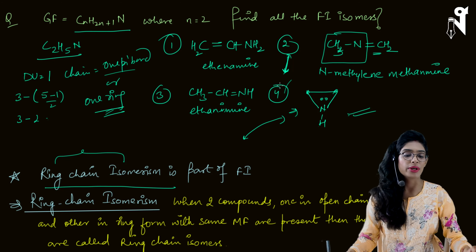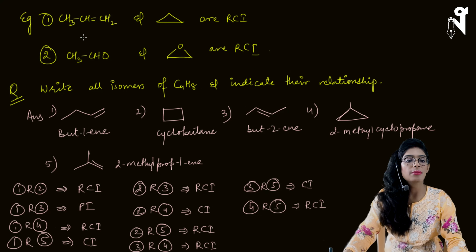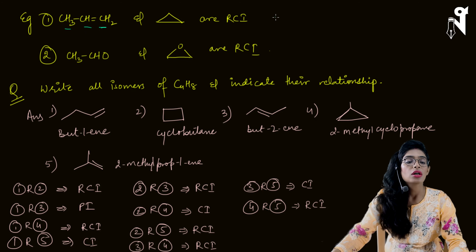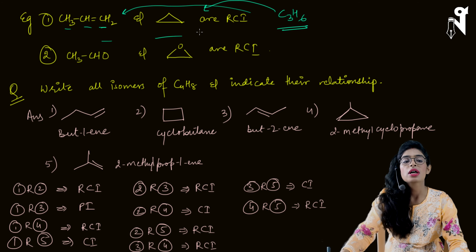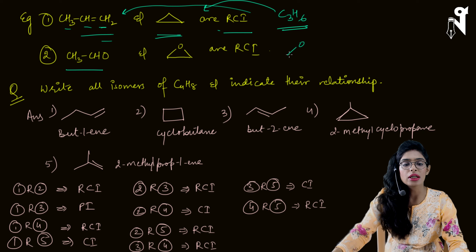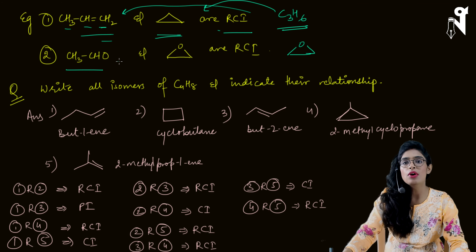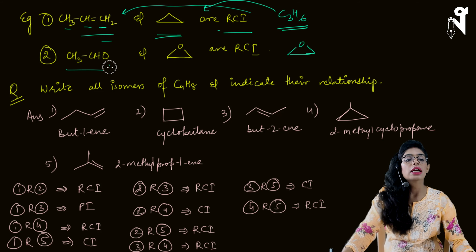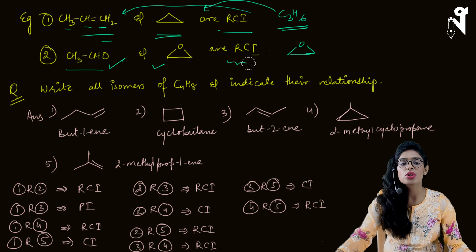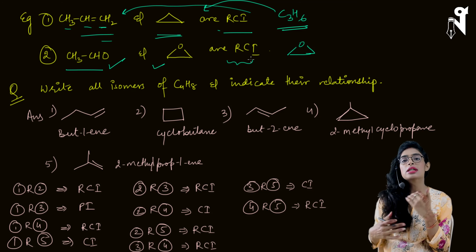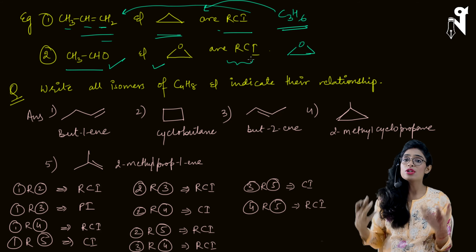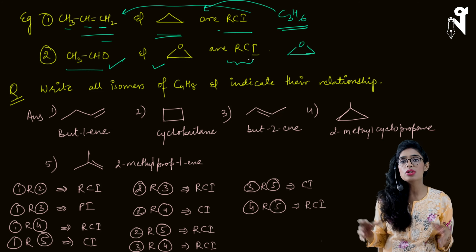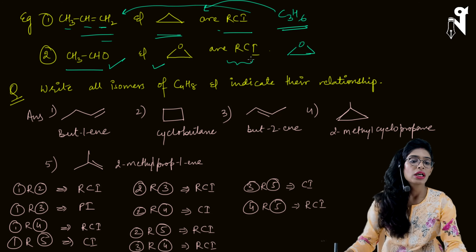For example, propene (CH3CH=CH2) and cyclopropane both have formula C3H6 — one is straight chain, one is cyclic, making them ring-chain isomers. Similarly, an aldehyde and a cyclic ether can share the same molecular formula and be ring-chain isomers. Look at the options in the question: if ring-chain isomer is specifically given, mark it; if it's not mentioned, all functional isomers including ring-chain are treated the same.